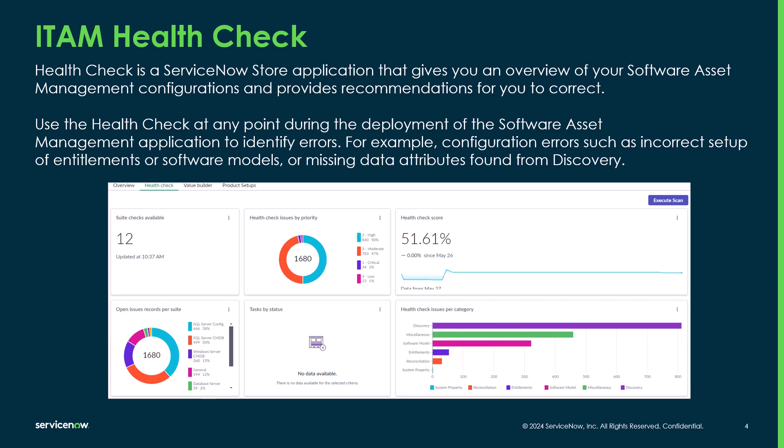SAM managers, SAM analysts, and implementation partners can all use the Health Check at any point during the deployment of SAM, or continually as you go through the life of SAM, to help keep an eye on any errors within the application. For example, configuration errors like incomplete setups in entitlements or software models, or missing data attributes in the CMDB that discovery is not populating — the Health Check can identify those issues.